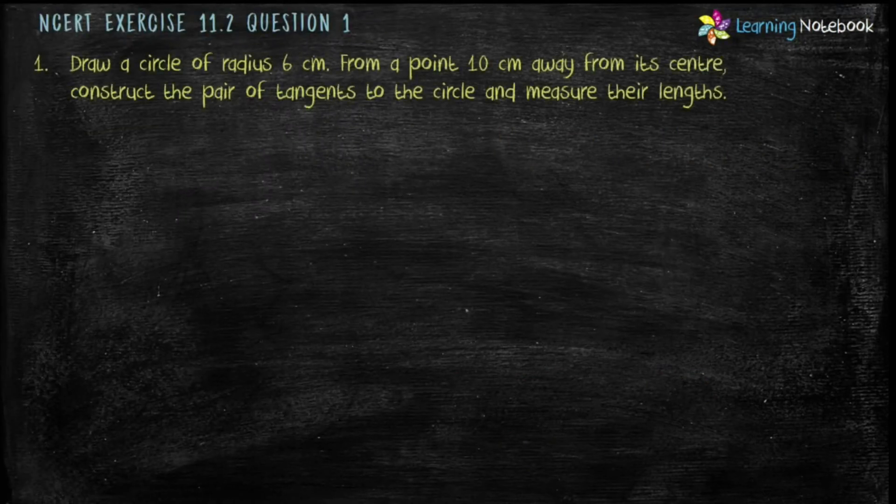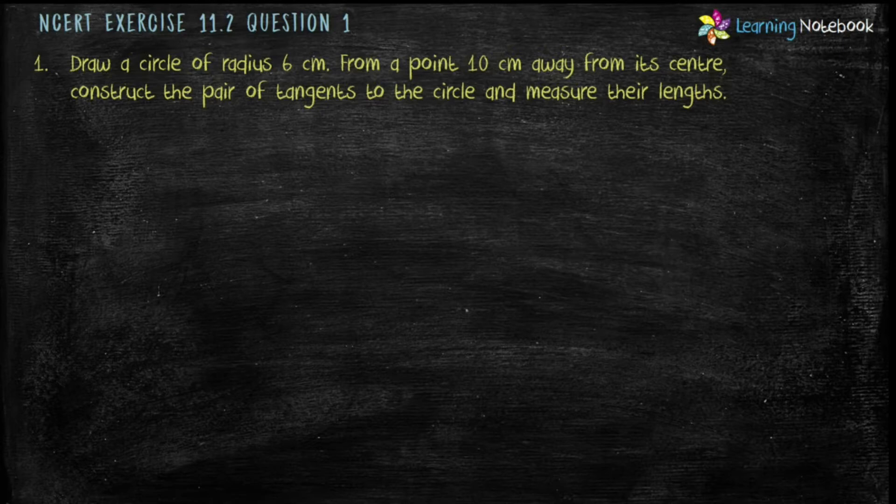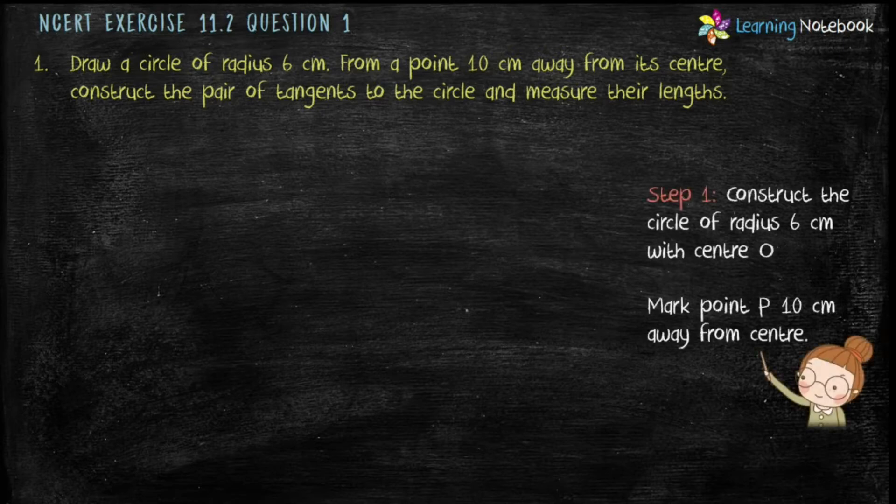Question is, draw a circle of radius 6 cm from a point 10 cm away from its center. Construct the pair of tangents to the circle and measure their length. So, let's draw the figure.